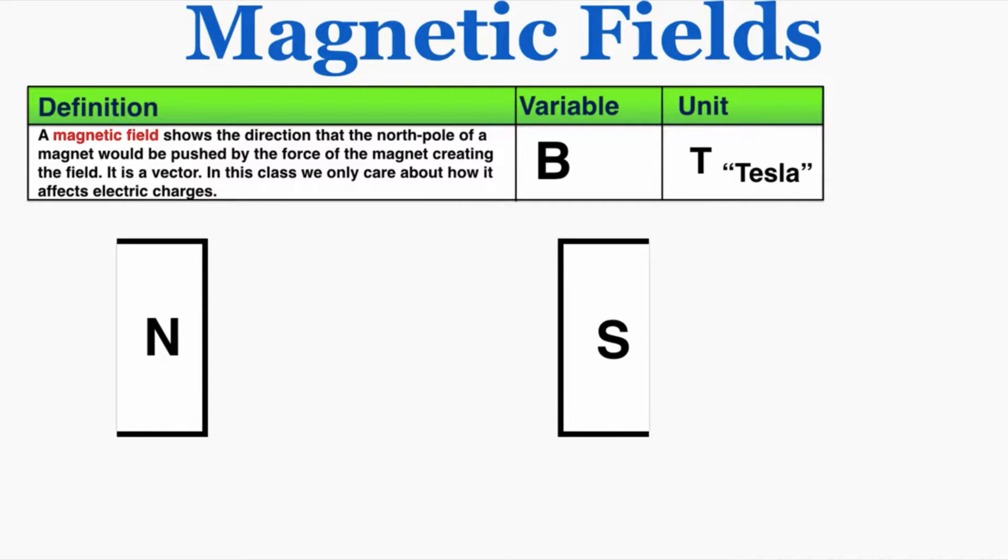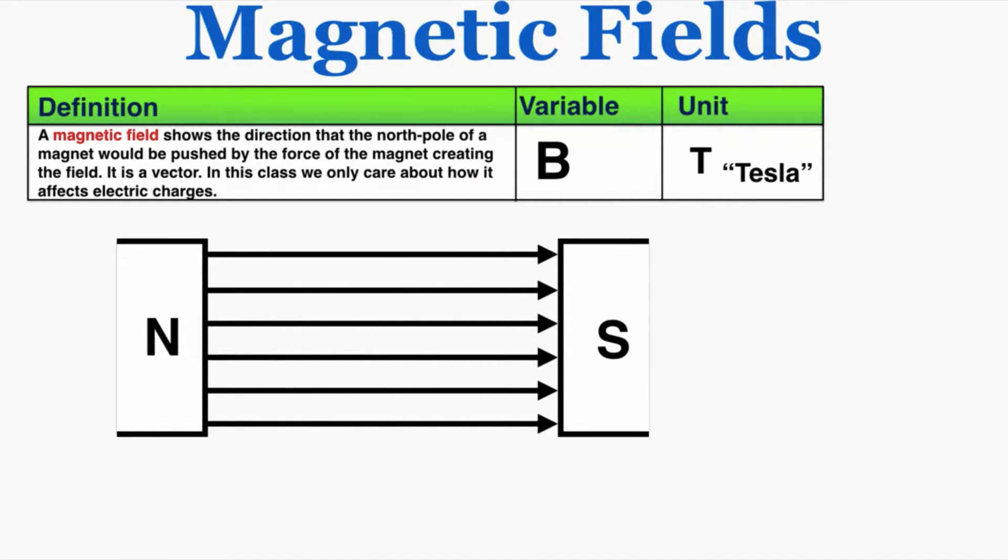I have here the north pole of one magnet and the south pole of another magnet. If we think about the direction that the north pole of a magnet would be pushed by these two poles, we know it would be pushed from the north pole to the south pole, and that would be the direction of the magnetic field.